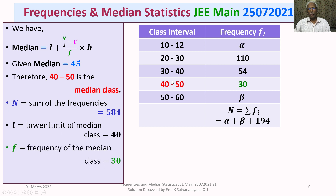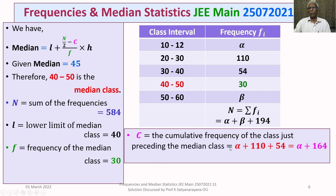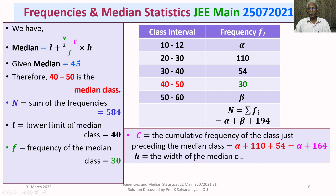F is the frequency of the median class (40 to 50), which is 30. C denotes the cumulative frequency of the class just preceding the median class. Adding frequencies up to but not including 40–50 gives alpha plus 110 plus 54, which is alpha plus 164. That is C. H is the width of the median class, which is 10.